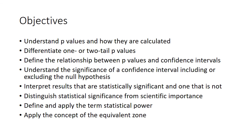We're going to look at understanding what a p-value is and how we calculate one. We'll talk about the difference between one-tail and two-tail p-values, and the relationship between how we can interpret p-values along with confidence intervals. Then we'll understand the significance of those confidence intervals including or excluding our null hypothesis, interpret results as to whether they're statistically significant, and distinguish scientific importance versus statistical significance. We'll also talk about power and the concept of the equivalence zone.